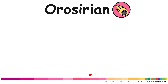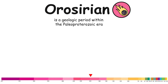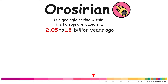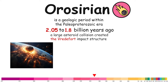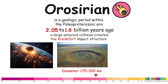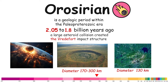Orosirian. The Orosirian is a geologic period within the Paleoproterozoic era, spanning approximately from 2.05 to 1.8 billion years ago. During this period, a large asteroid collision created the Vredefort impact structure. The event that created the Sudbury Basin structure occurred near the end of the period, 1.85 billion years ago.